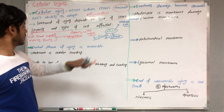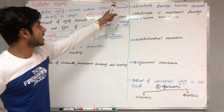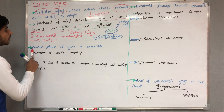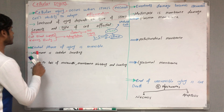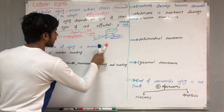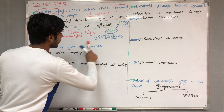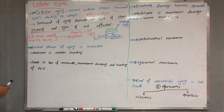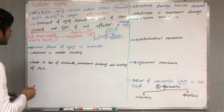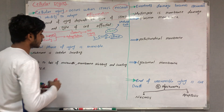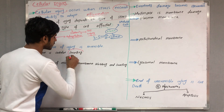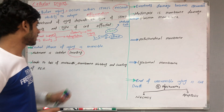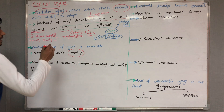If the stress exceeds the limit, the cell will undergo cell injury. The initial phase is reversible cell injury. The hallmark of reversible cell injury is cell swelling — this is the first sign of reversible cell injury.